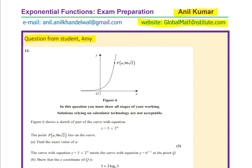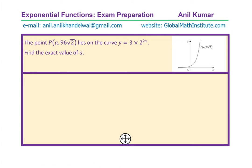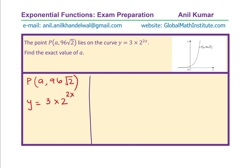Now let us see how to solve such questions. Let us do part A where on the curve we are given a point P. The point P given to us is A, 96 square root 2. The function is y equals 3 times 2 to the power of 2x. If we know the y value and the x value, you can find x by substituting the coordinates into the given equation. The x value is A and the y value is 96 square root 2. So we can write 96 square root 2 divided by 3 equals 2 to the power of 2A.